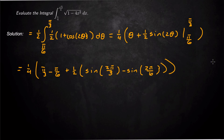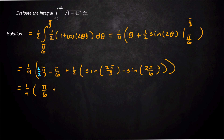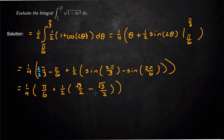We've got a lot of parentheses, so keep them straight. π/3 minus π/6 is 2π/6 minus π/6 = π/6. For sin(2π/3): that's in quadrant 2 with reference angle π/3, so it equals √3/2. And sin(2π/6) = sin(π/3) = √3/2 as well. So those cancel out and equal 0. We're left with (1/4)(π/6), which gives us π/24. So π/24 is our answer.